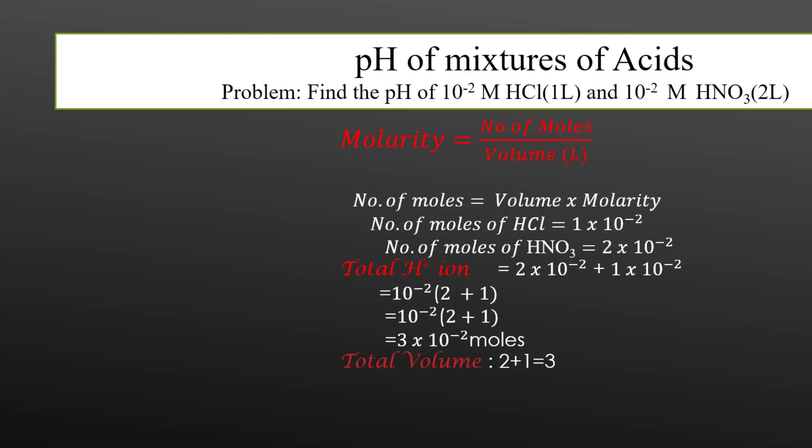And the total volume of the solution would be 2 plus 1. That is 2 liters are coming from HNO3 and 1 liter from HCl.